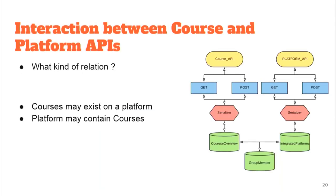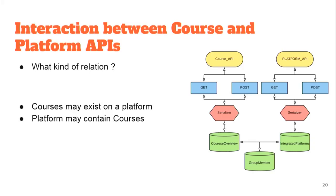Regarding the interaction between course and platform: a many-to-many relationship is needed, because one course can exist on multiple platforms as needed by the author, and a platform must contain many courses according to the needs of the students.